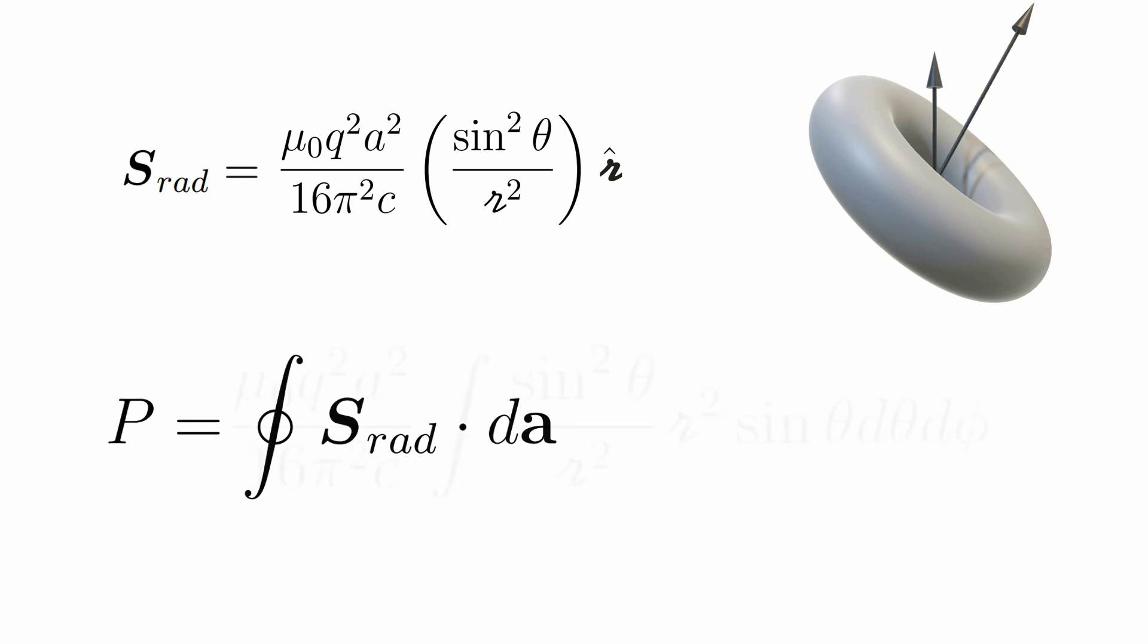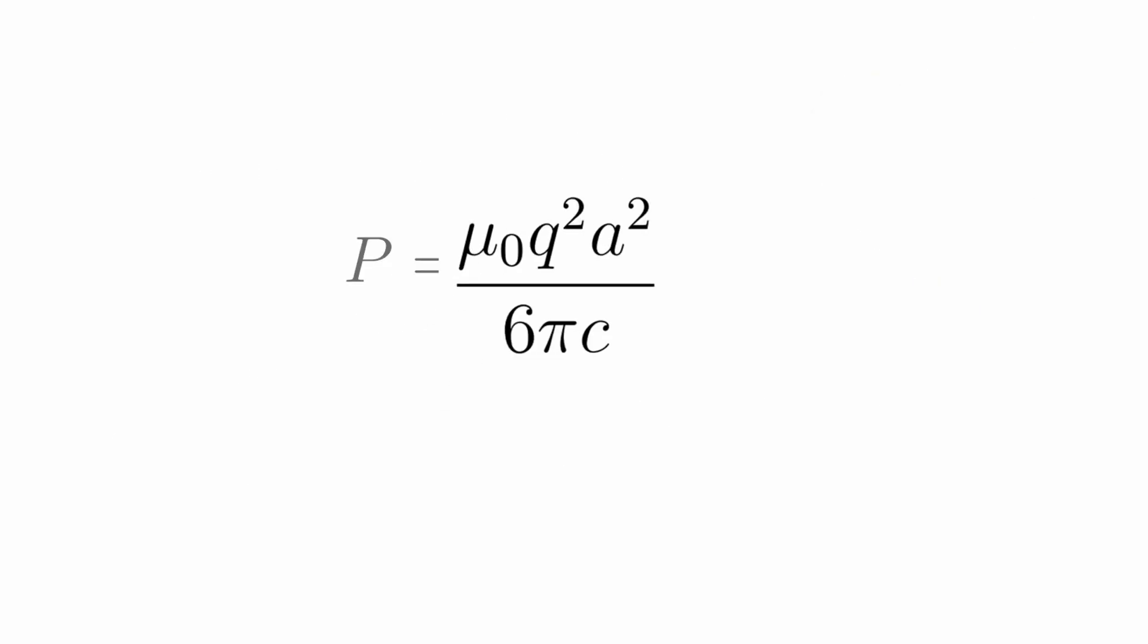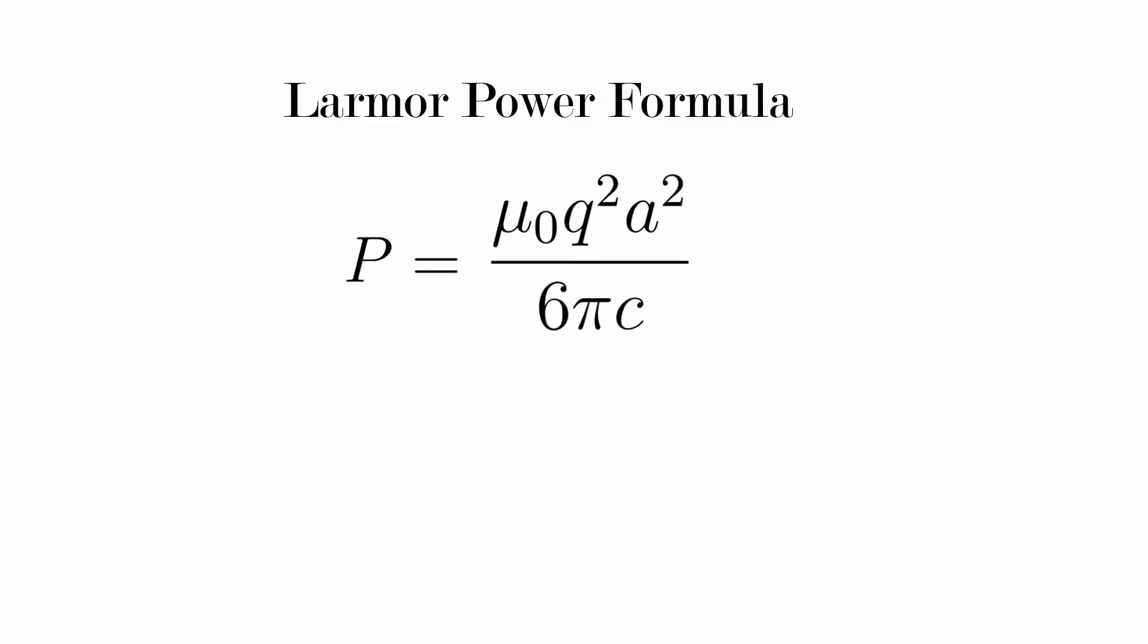And using spherical polar coordinates, we get the Larmor formula for power being radiated from an accelerating charge. It can be noted from the equation that the power is directly proportional to the square of the acceleration.